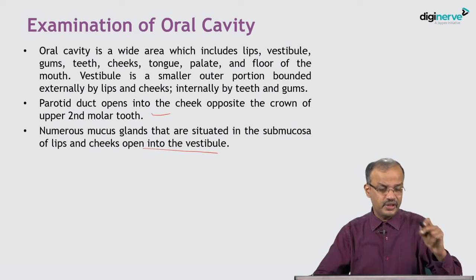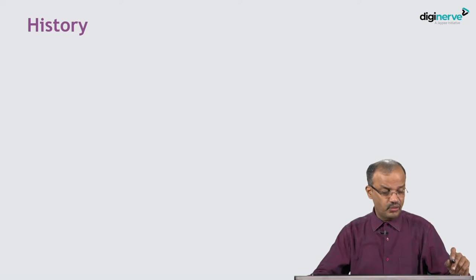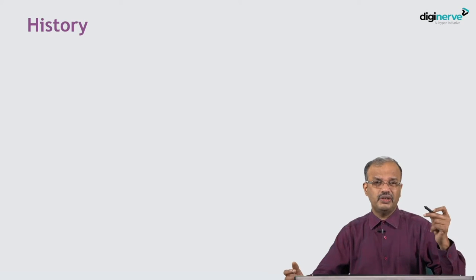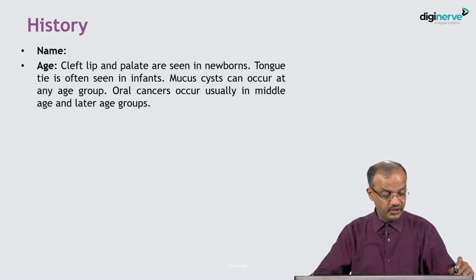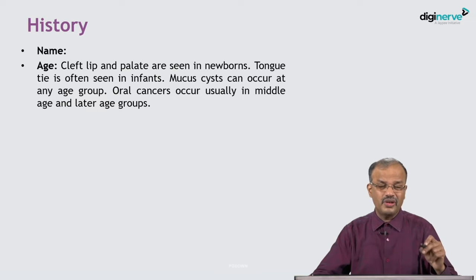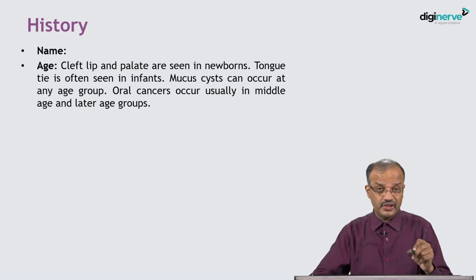Numerous mucous glands situated in the submucosa of the lips and cheeks open into the vestibule, secreting fluid that keeps the inner lip wet. When taking history for any oral cavity disease, name and age are important. In cleft palate and cleft lip, these are seen in newborns; tongue tie is seen in infants.